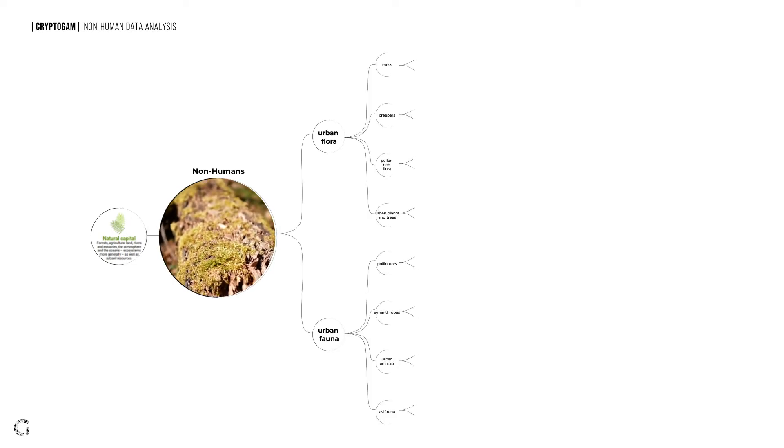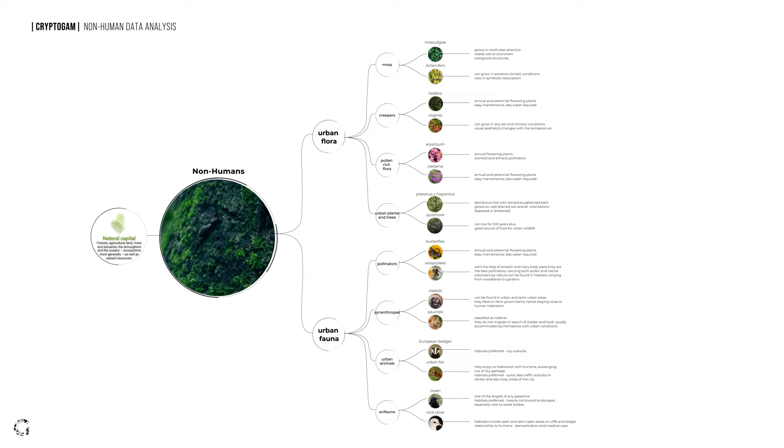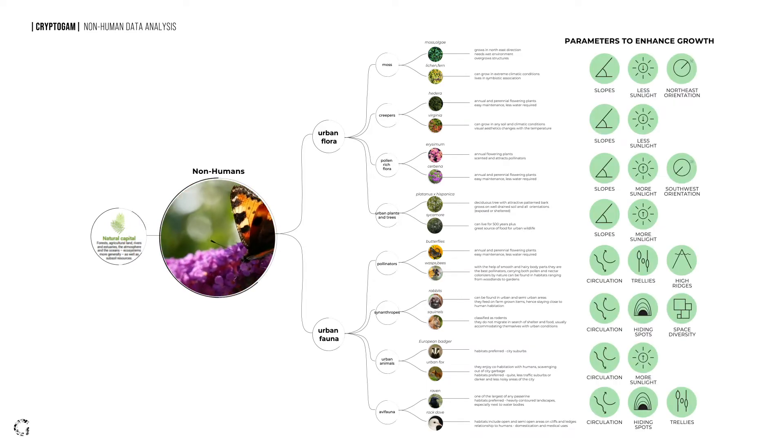Our design system is interested in developing spatial conditions that are optimized for the growth of non-human agents. For both urban flora and fauna, we gather the essential parameters for their habitation, such as slopes and different orientations for different growth, as well as seclusion, circulation, and nesting areas. We initiate the process by translating the above non-human niches into ecological big data through machine learning.